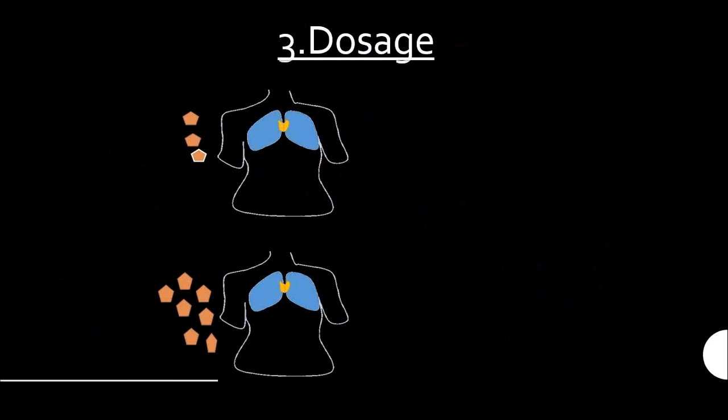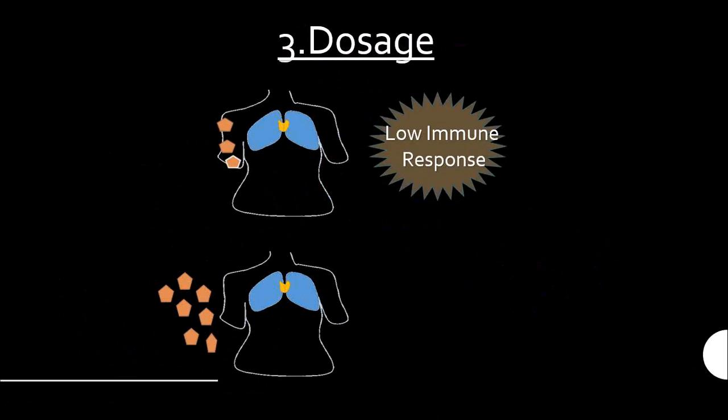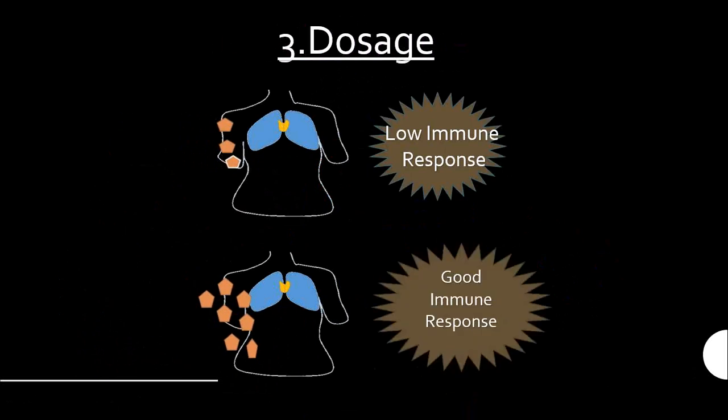The third requirement is dosage. The less antigen enters the body, the lower the immune response. The more antigen, the better the immune response.